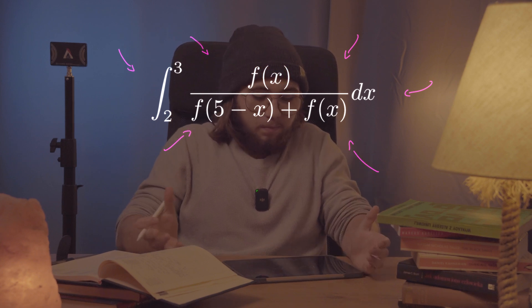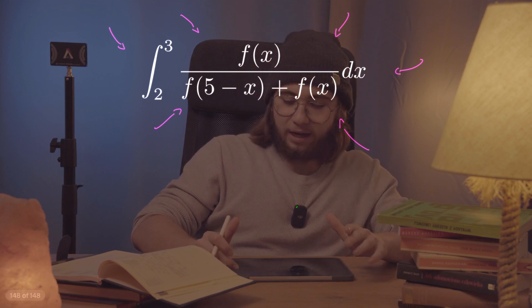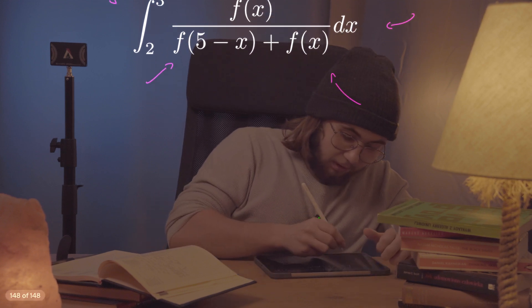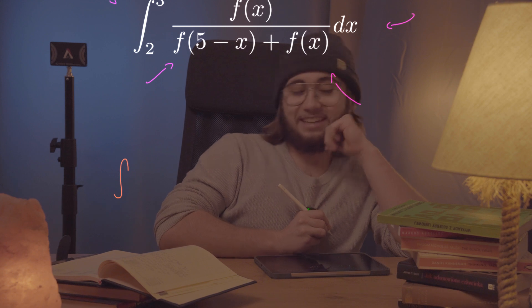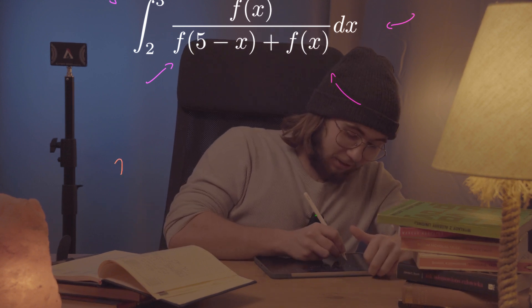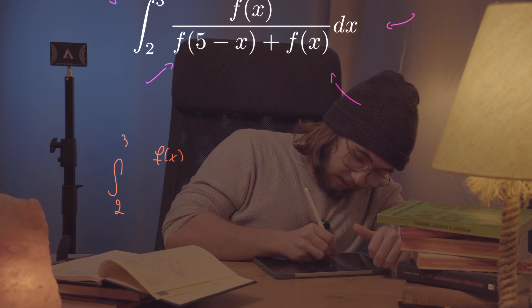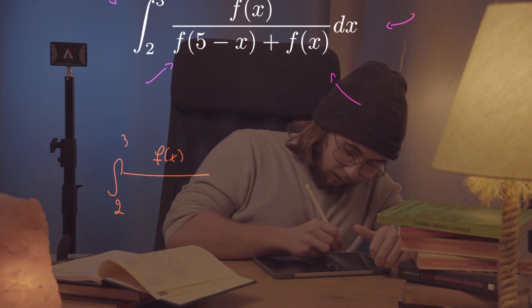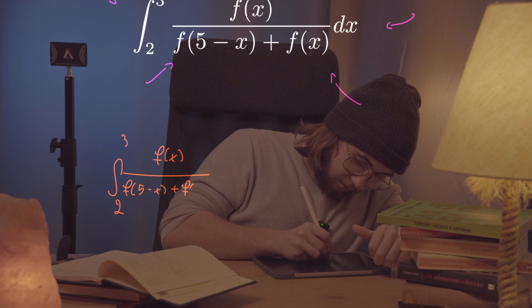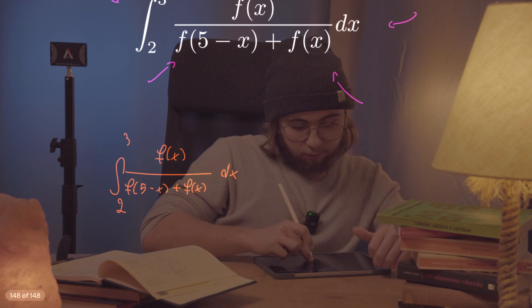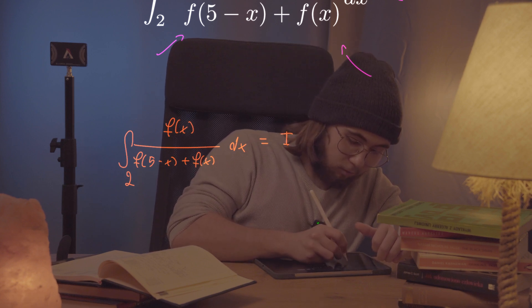Let's first of all rewrite this problem. I'm going to slide over here to the bottom and rewrite this: the integral from two to three of f of x, everything divided by f of five minus x plus f of x, dx. I would like to set this integral equal to I, because it's just a value.